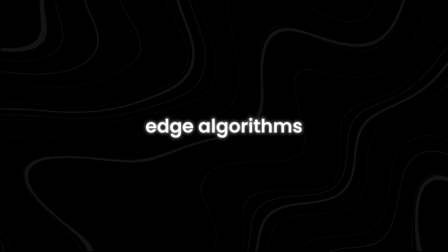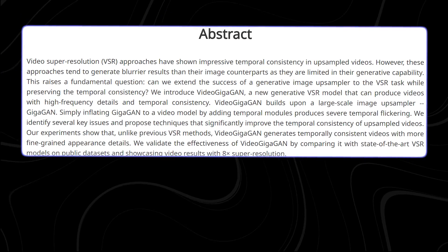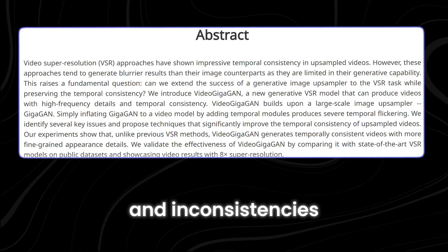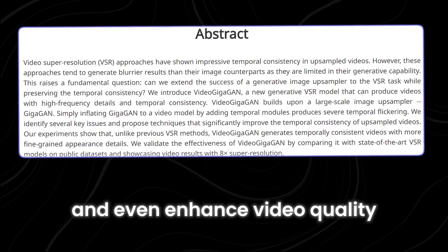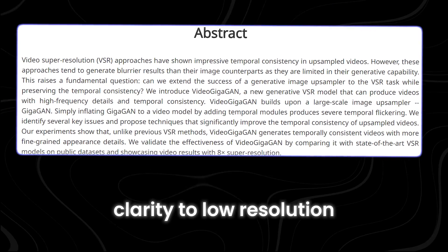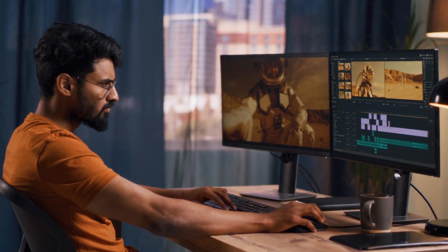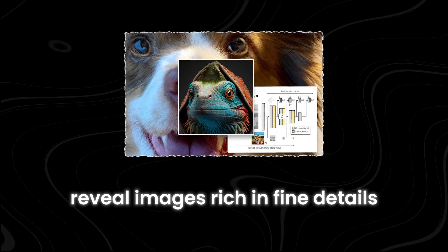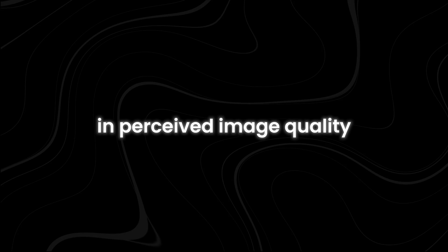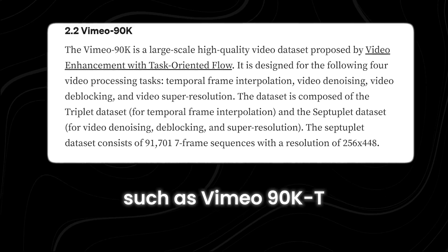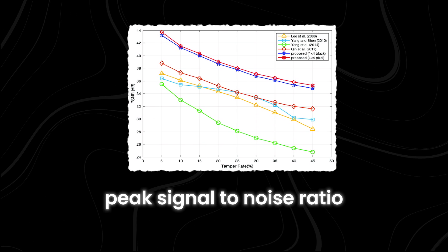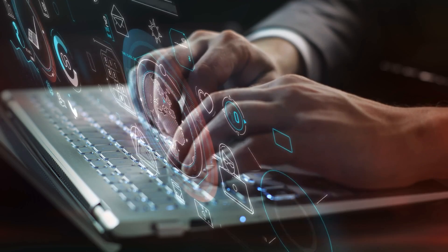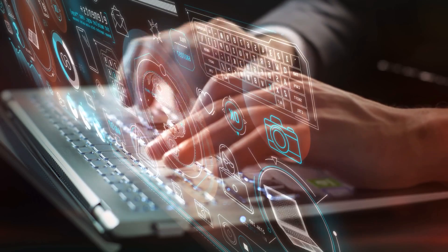Equipped with cutting-edge algorithms, Video Gigagan tackles temporal consistency issues with ease, delivering smooth and seamless videos that are free from jitters and inconsistencies. At the same time, its advanced features help maintain and even enhance video quality, restoring detail and clarity to low-resolution or blurry footage. In short, Video Gigagan is a game-changer for video editors, streamlining their workflow and producing high-quality results with minimal effort. Qualitative assessments of Video Gigagan's output reveal images rich in fine details, accompanied by seamless temporal coherence, with tangible improvements evident when evaluating datasets such as Vimeo 90KT and REDS-4 using metrics like peak signal-to-noise ratio and structural similarity index.